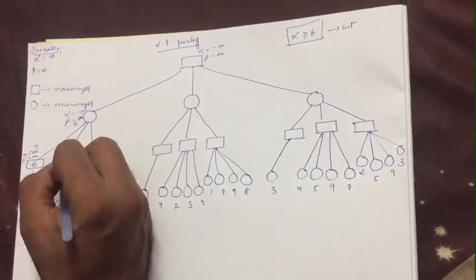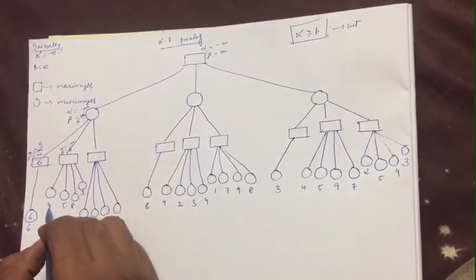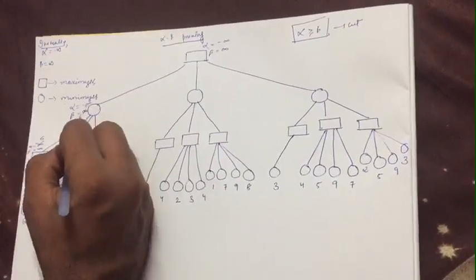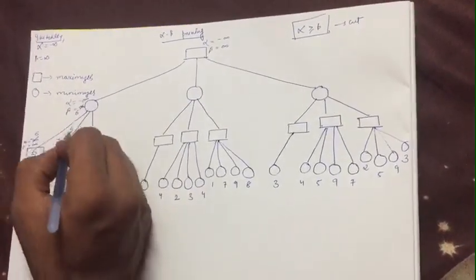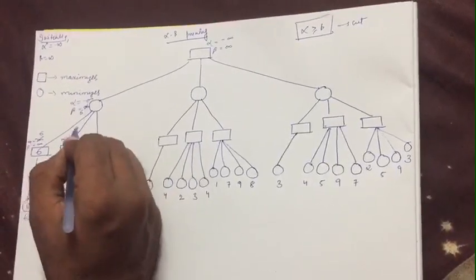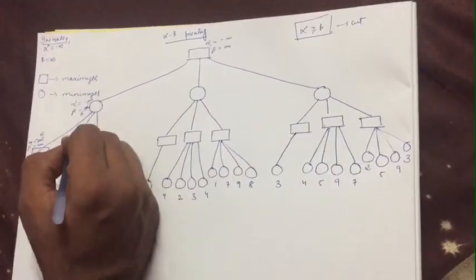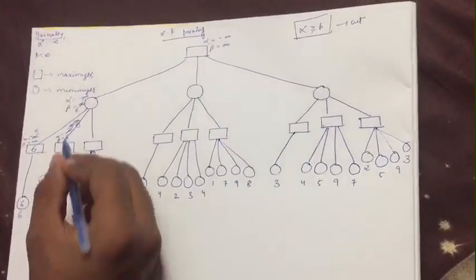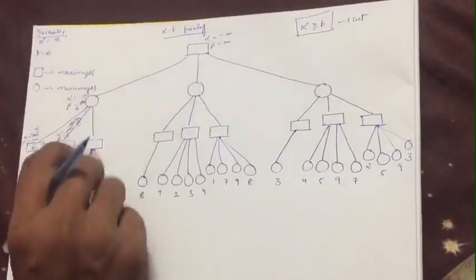Now with alpha equals minus infinity and beta equals 6, we evaluate the next branch. Value 4: is 4 greater than minus infinity? Yes, so cut minus infinity and write alpha as 4. Value 5: is 5 greater than 4? Yes, so cut 4 and write 5. Value 8: is 8 greater than 5? Yes, so cut 5 and write 8. Next value is 3, which is not greater than 8.